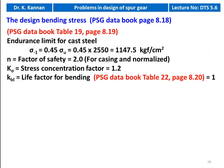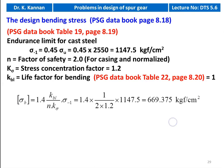We calculate the design bending stress. The data is available on page number 8.19. Endurance limit σ₋₁ = 0.45 × σU for cast iron = 0.45 × 2550 = 1147.5 kgf/cm². Factor of safety = 2.0 for casting. Stress concentration factor Kσ = 1.2, life factor for bending KBL = 1. Design bending stress σB = 1.4 × KBL / (N × Kσ) × σ₋₁ = 1.4 × 1 / (2 × 1.2) × 1147.5 = 669.375 kgf/cm².